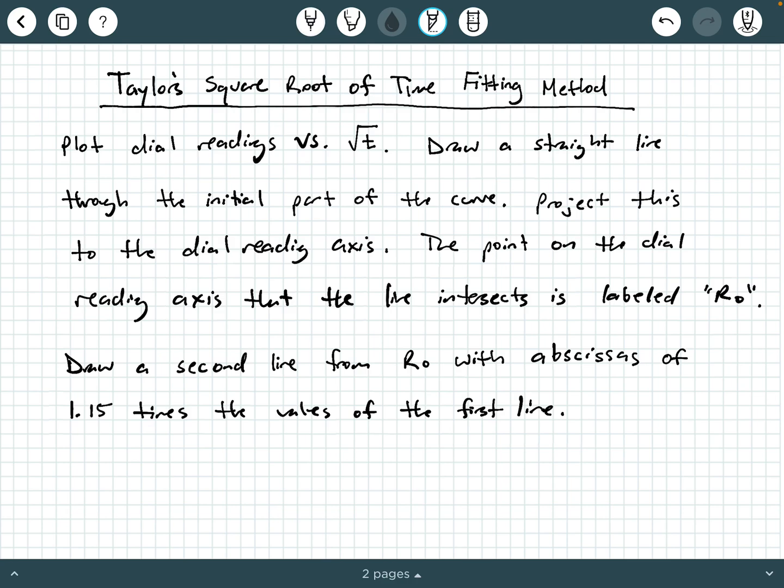So where this line, where this second line intersects the data curve, defines R90 and square root of T90. Now, remember, the subscript 90 represents 90% consolidation.